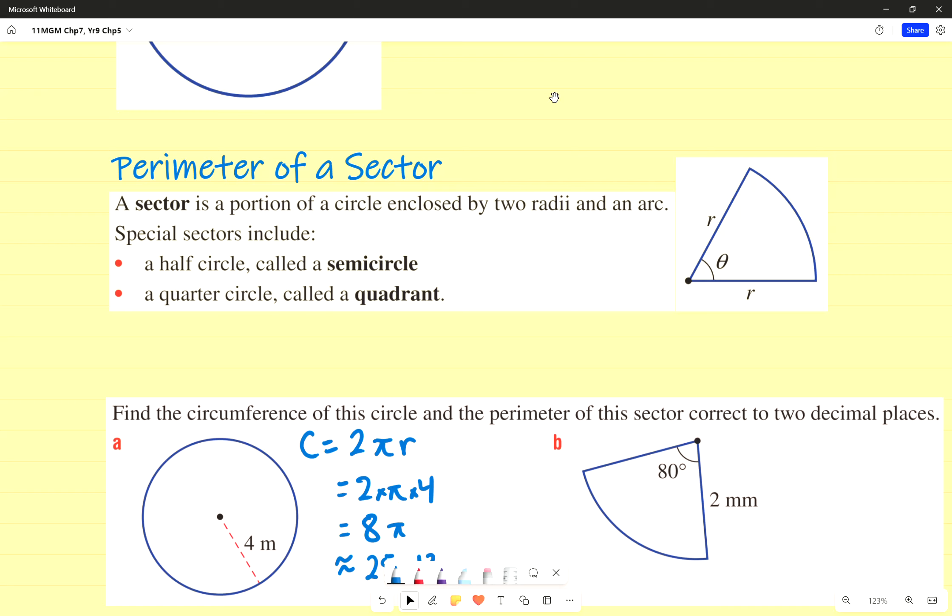Good afternoon, Ash. Alright, so just a couple of quick notes. Semicircle, of course, is half-circle, and quadrant is a quarter of a circle. I'm going to jump straight into an example, and then we're good to go.